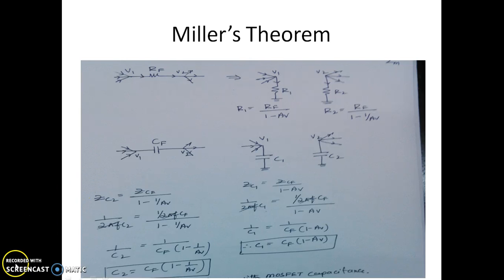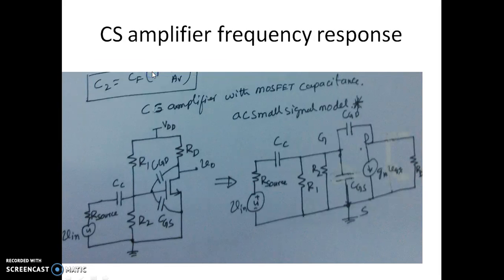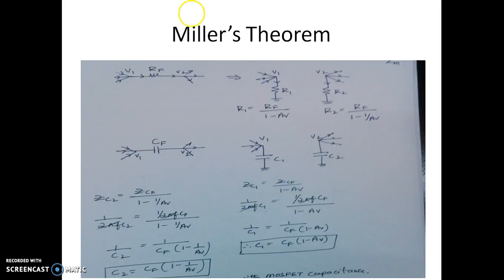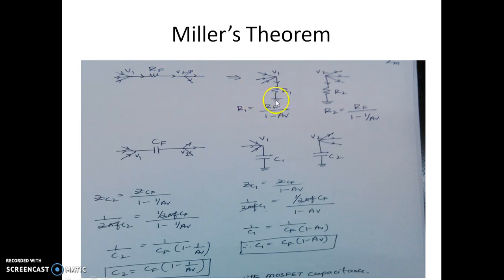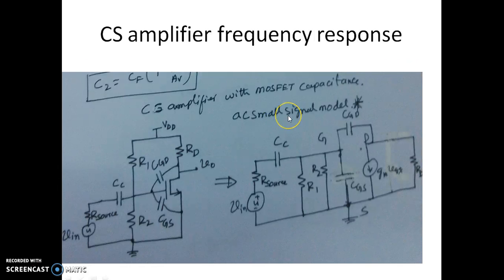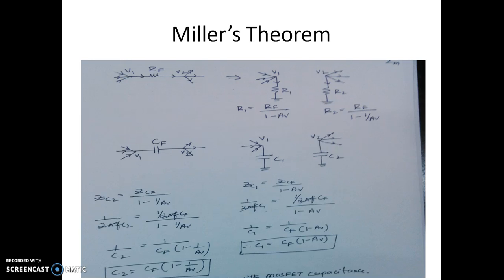Now let us consider the exact circuit, but instead of ZF we take a resistor RF. This RF will be represented as R1 at node V1 and R2 at node V2. R1 is given by RF / (1 - AV), and R2 is represented by RF / (1 - 1/AV).